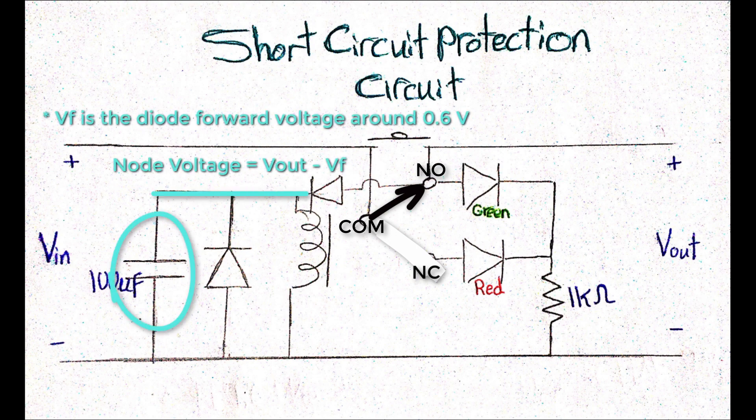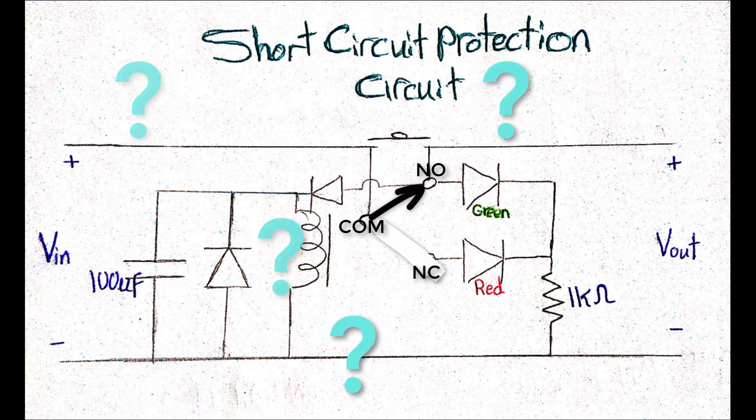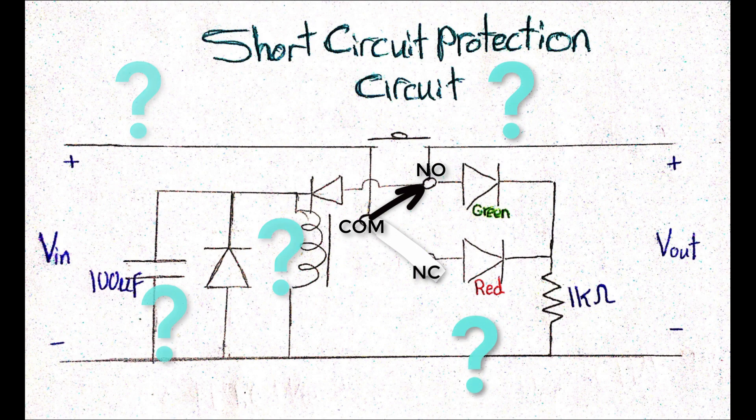Finally, this shunt capacitor is a bypass capacitor, used for stabilizing the voltage across the relay coil. Ok, so how can this circuit protect me from short circuits, right?